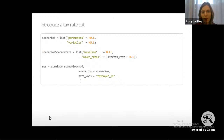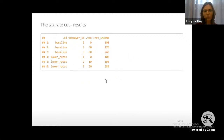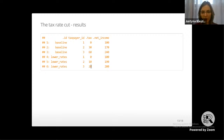Most of the time we want to simulate alternative tax proposals. For example, we can cut the tax rate from 0.3 to 0.1 to define a lower-rate scenario, then call simulate_scenarios. The output shows each taxpayer's tax liability and net income under baseline and the lower-rate scenario. Under the lower-rate scenario the absolute tax is lower than under baseline.